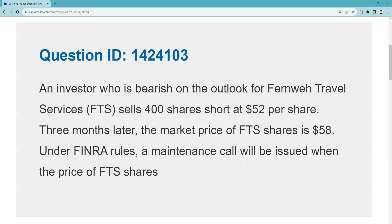An investor is bearish on the outlook of FTS — travel services — and sells 400 shares short at $52. What I always like to do is get the market value and see what's going to happen. In margin questions you're either going to have to do a minimum initial setup and then perhaps a mark to market. So first thing: I'm shorting 400 shares at $52, so the short market value is $20,800.